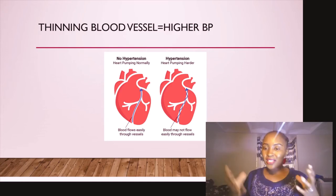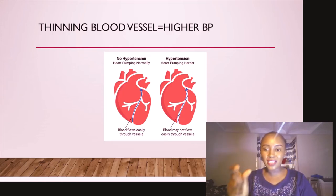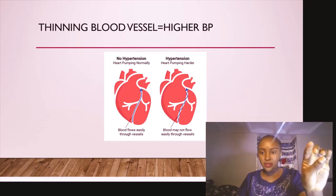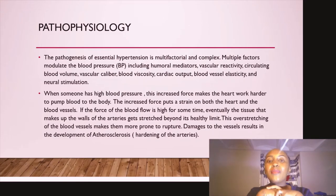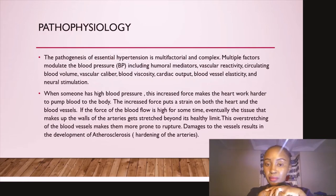For example, just like when you're watering things using a hose pipe — if you press and minimize the diameter of the pipe's lumen, the water tends to jet out. That is exactly what happens in high blood pressure. When it comes to the pathophysiology of hypertension, it is multifactorial and very complex, because there are multiple factors that modulate blood pressure in the body.